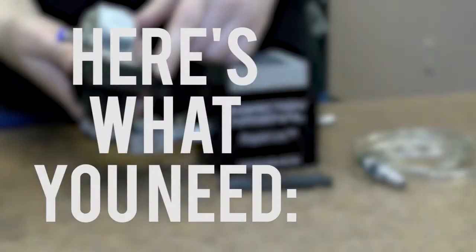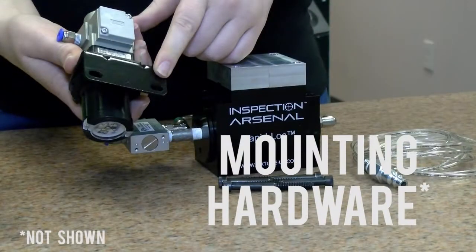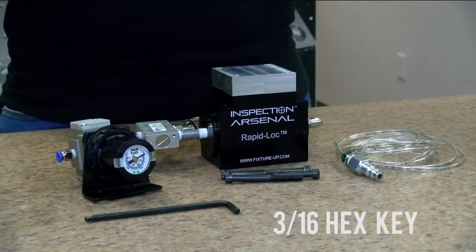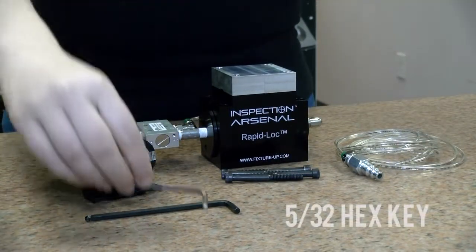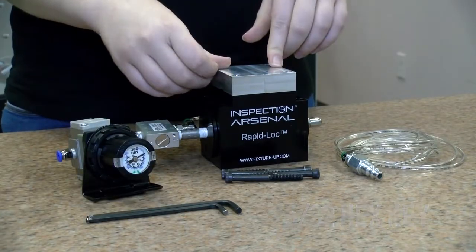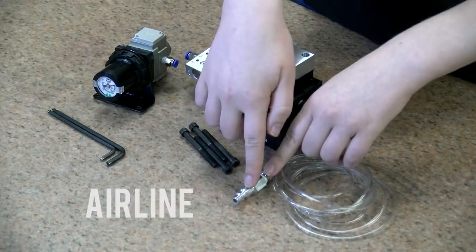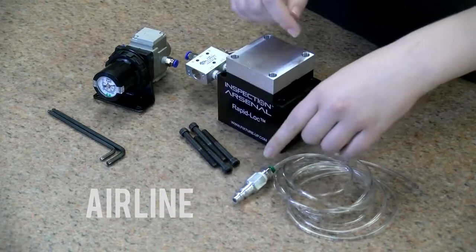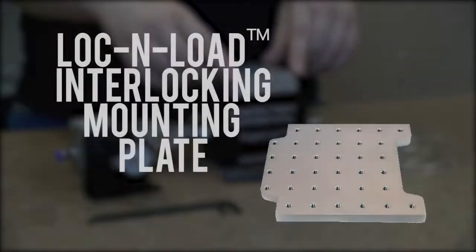Here is what you need. Mounting hardware for the regulator bracket, a 3/16ths hex key for cap screws, a 5/32nd hex key, an airline connected to compressed air with female quick connect fitting, a lock and load mounting plate is also strongly recommended.